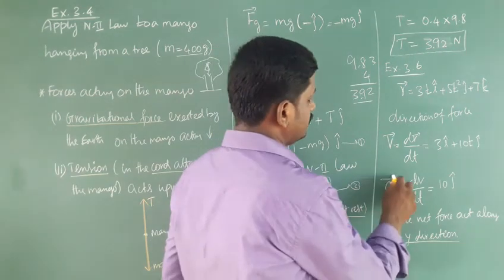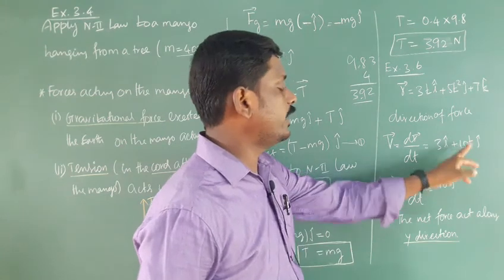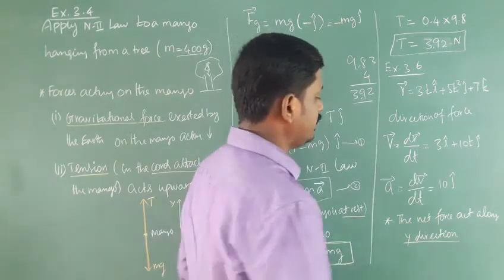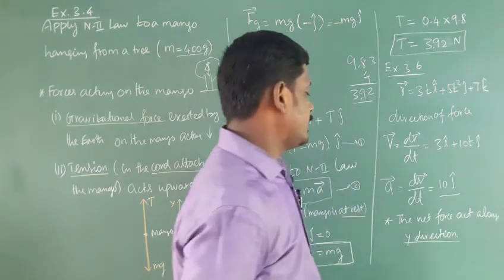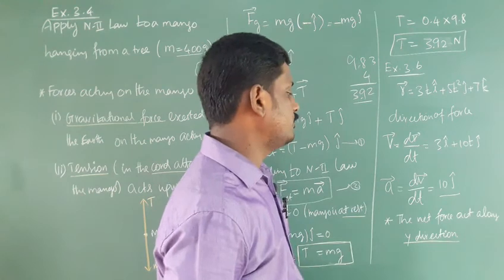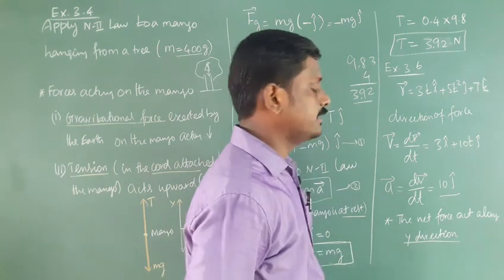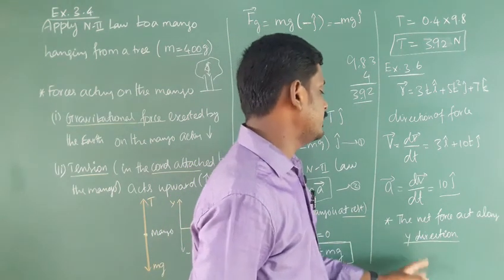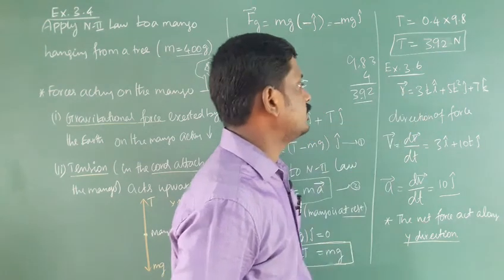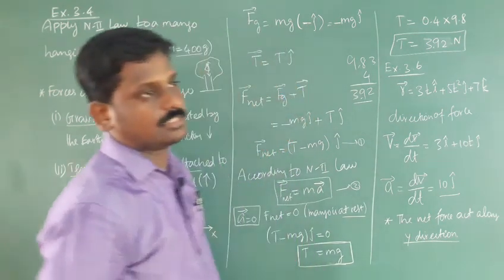The acceleration A equals dV/dt. Differentiating, the acceleration is 10 ĵ — only in the Y direction. Since acceleration is in the Y direction, the net force also acts along the Y direction. There is no force in the Z or X directions.